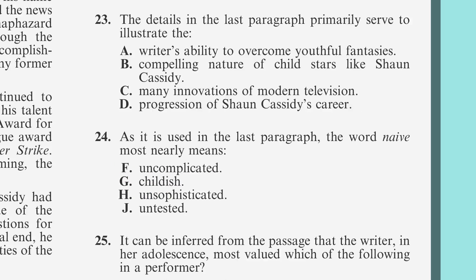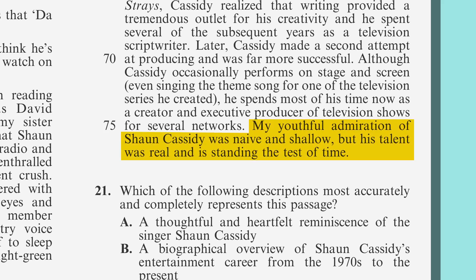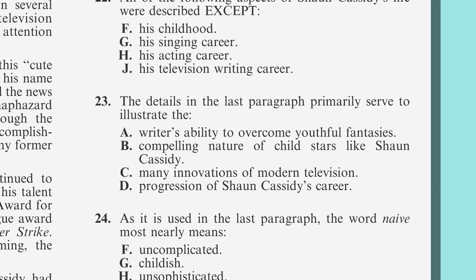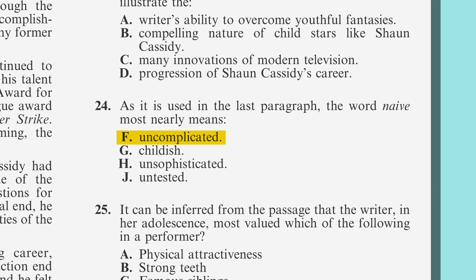If we go back to the last paragraph, the sentence reads: My youthful admiration of Sean Cassidy was naive and shallow, but his talent was real and is standing the test of time. Choice F is uncomplicated. Whether or not her admiration was complicated isn't the message of the paragraph, so that doesn't work. Choice G is childish. That works because it's supported by the first clause of the sentence, where she calls her admiration youthful. But let's make sure that's the best answer.